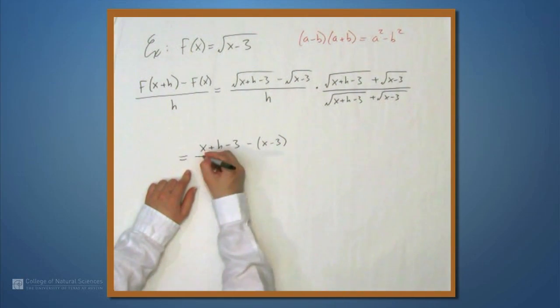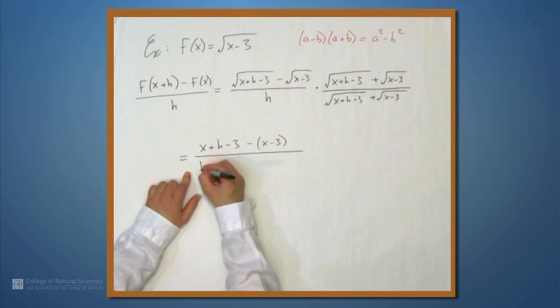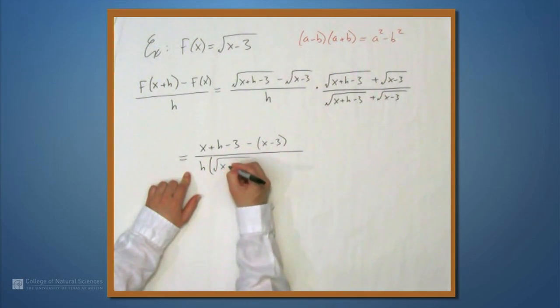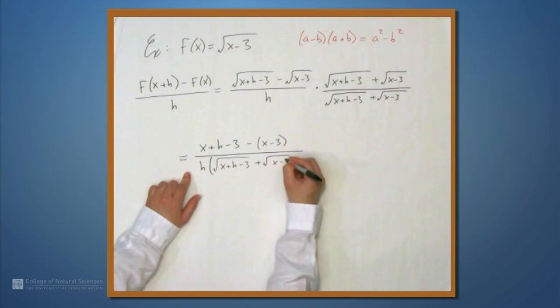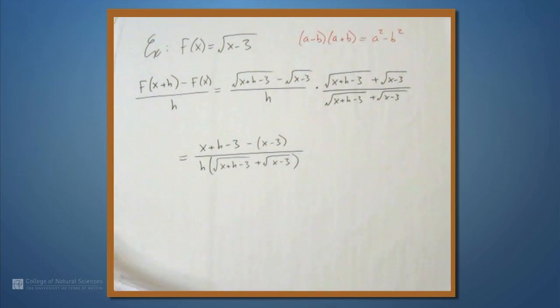Now, this is all over h times this quantity here. So, h times the square root of x plus h minus 3 plus the square root of x minus 3. What happens in the numerator? We have an x minus x, they disappear. We have a minus 3 and a minus minus 3, so they disappear also. And we're left with nothing but an h in the numerator.